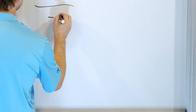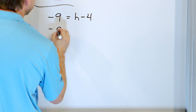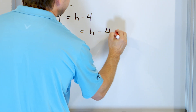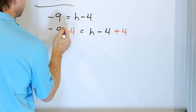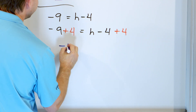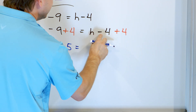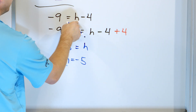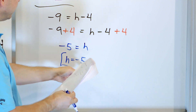Here is our very last problem: negative 9 equals h minus 4. Rewrite it: negative 9 equals h minus 4. I want h by itself — I've subtracted 4, so I need to do the opposite, adding 4 to both sides. On the left-hand side, negative 9 plus 4 gives you negative 5. On the right, minus 4 plus 4 gives you 0, so you just have h. So h is negative 5. Check your work: negative 5 minus 4 means you're more in debt, and so you get negative 9. The answer is correct.